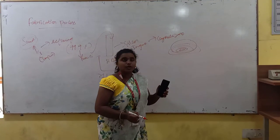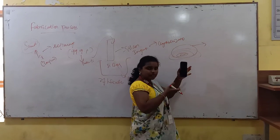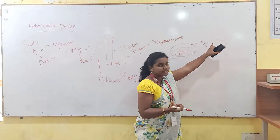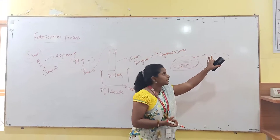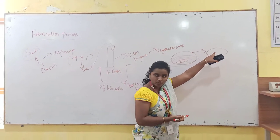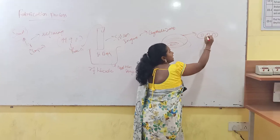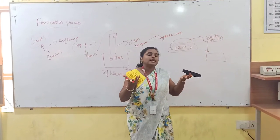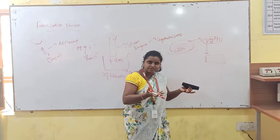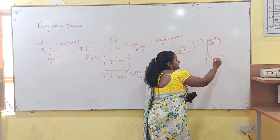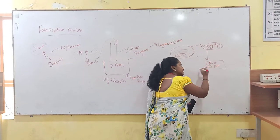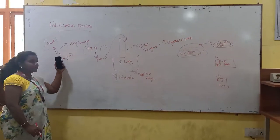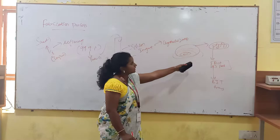In this single silicon wafer, we will be fabricating N number of ICs. The IC will consist of active and passive elements like resistors, capacitors, and transistors. I am taking a single transistor — let us consider this is a BJT transistor. Starting from the sand, we obtain silicon and finally get our silicon wafer.